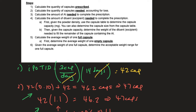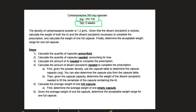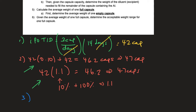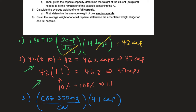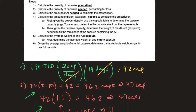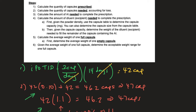Step three: calculate the amount of AI needed to complete the prescription. The script calls for carbamazepine 300mg per capsule, and we need 47 capsules accounting for loss. So 300mg × 47 = 14,100mg of carbamazepine total needed. Then step four: calculate the amount of diluent, also called excipient, needed to complete the prescription.